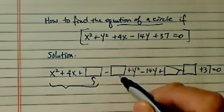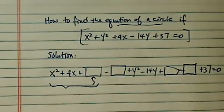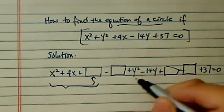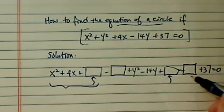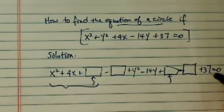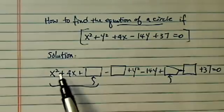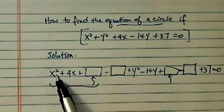Since I added a number I better subtract it, otherwise I change what I started with. Same thing over here, I have added a magic number, I'm going to subtract the same number again and leave my 37. As you notice all the original terms are untouched,